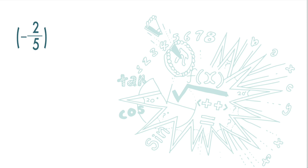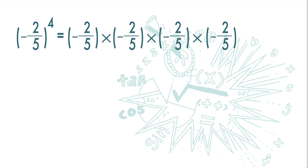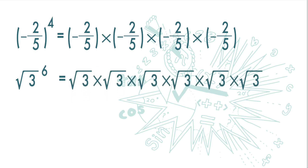This one: negative 2 over 5 to the power of 4 means negative 2 over 5 multiplied by itself 4 times. Square root of 3 to the power of 6 means square root of 3 multiplied by itself 6 times. And this one: x plus 3, in brackets, to the power of 4 means x plus 3 multiplied by itself 4 times.